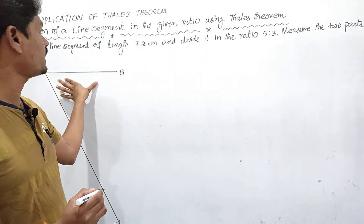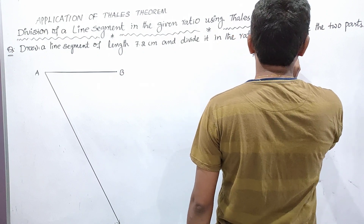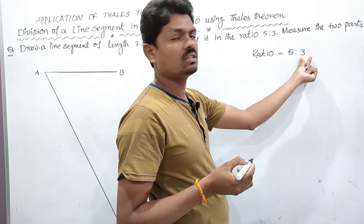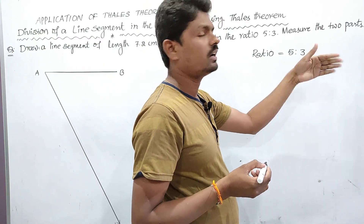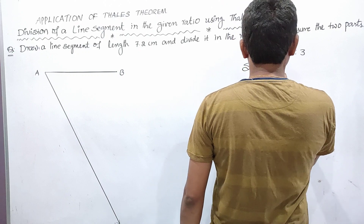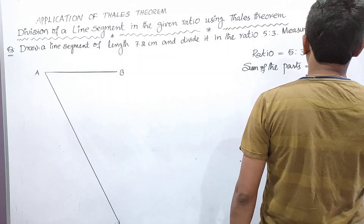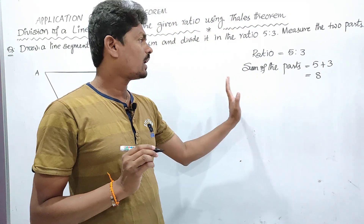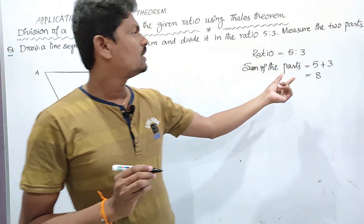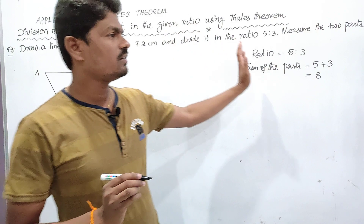Coming to the ratio, we have to divide this line segment in the ratio 5 is to 3. The given ratio is 5 is to 3 — the first part is the antecedent and the second part is the consequent. Now we have to find the sum of the parts: 5 plus 3 equals 8. So we have to mark off 8 points on the ray AX.